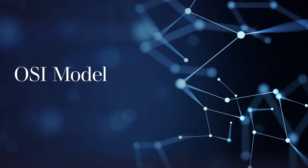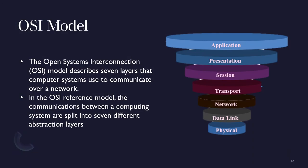OSI model. The OSI model describes seven layers that computer systems use to communicate over a network. In the OSI reference model, communication between computing systems is split into seven different abstraction layers: Application, Presentation, Session, Transport, Network, Data Link, and Physical.